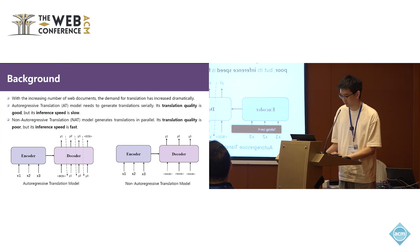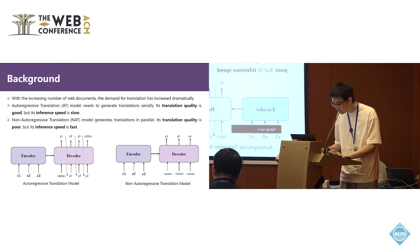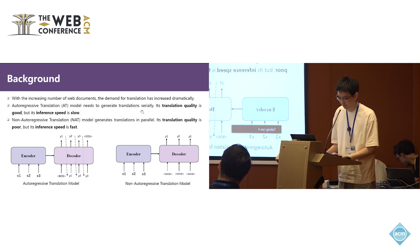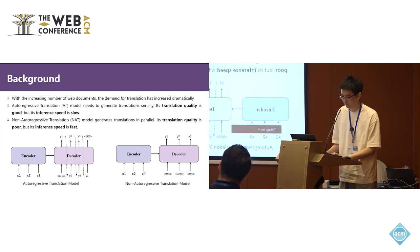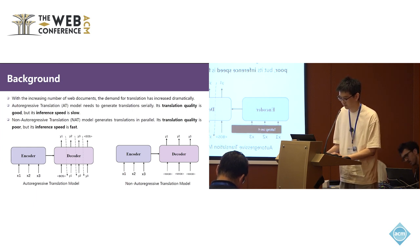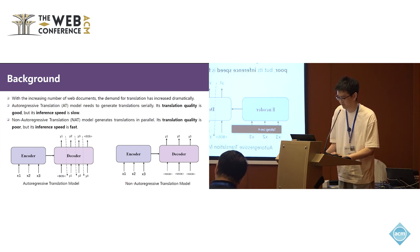Different from AT mode, the non-autoregressive translation mode generates translation in parallel. Generally, it first predicts the length of the translations and then inputs the corresponding number of tokens into the decoder, allowing it to predict all tokens at the same time. NAT cannot explicitly model the left to right relationship between translation tokens, so its translation quality is poor, but its inference speed is fast.